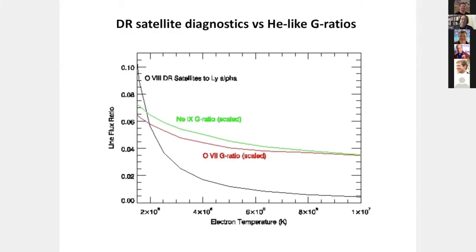We want to look at the dielectronic recombination satellite line because it can be a very powerful tool. This shows how much more sensitive the DR satellite line ratio to Lyman alpha is — I'm going to talk exclusively about oxygen 8, but it's generally applicable — compared to the helium-like G ratios, which have very shallow dependence on electron temperature. The DR satellite lines are down by a factor of 500 to 1000 from the peak of Lyman alpha, but it actually doesn't make very much statistical difference which ones you would use.